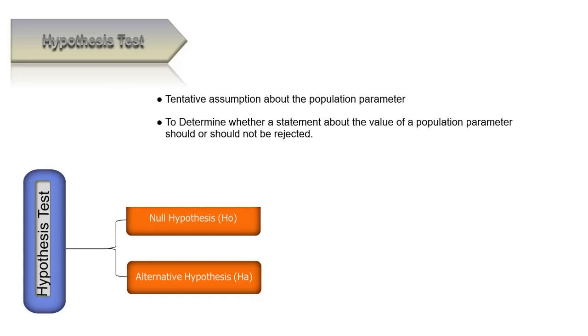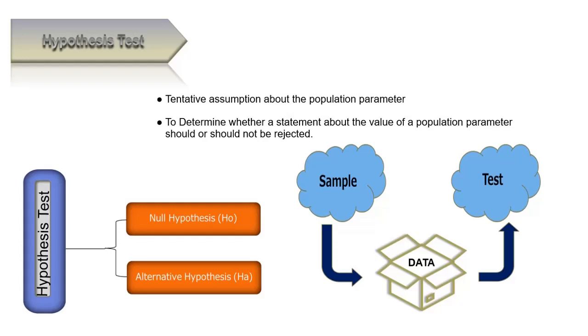The tentative assumption is called the null hypothesis, denoted H0. Then we define another hypothesis called the alternative hypothesis, which is opposite of what is stated in the null hypothesis. This alternative hypothesis is denoted HA. The H0 and HA indicate the two competing statements of the hypothesis testing procedure.